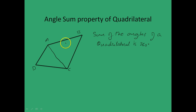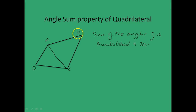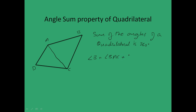In triangle ABC, the sum of the angles is 180 degrees. So, angle B plus angle BAC plus angle BCA is equal to 180 degrees.